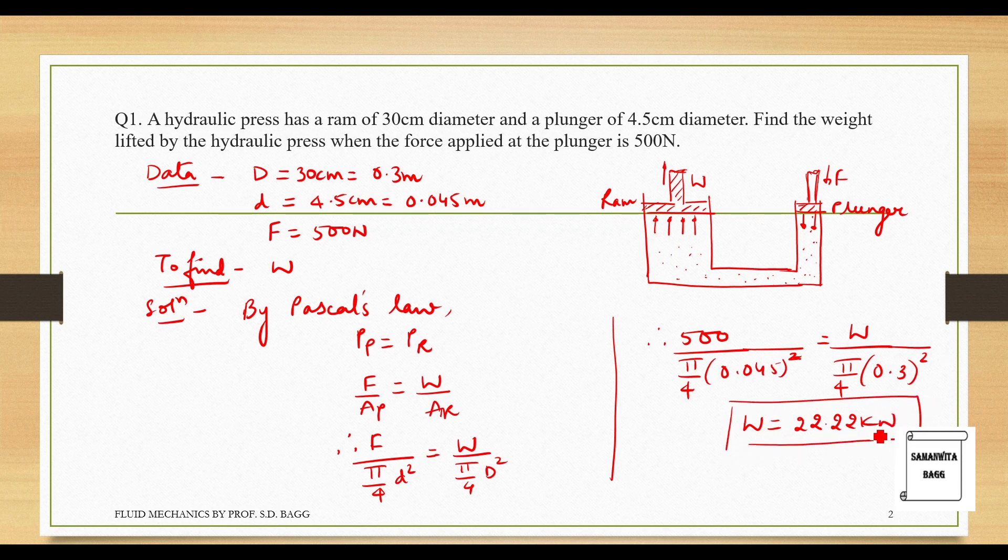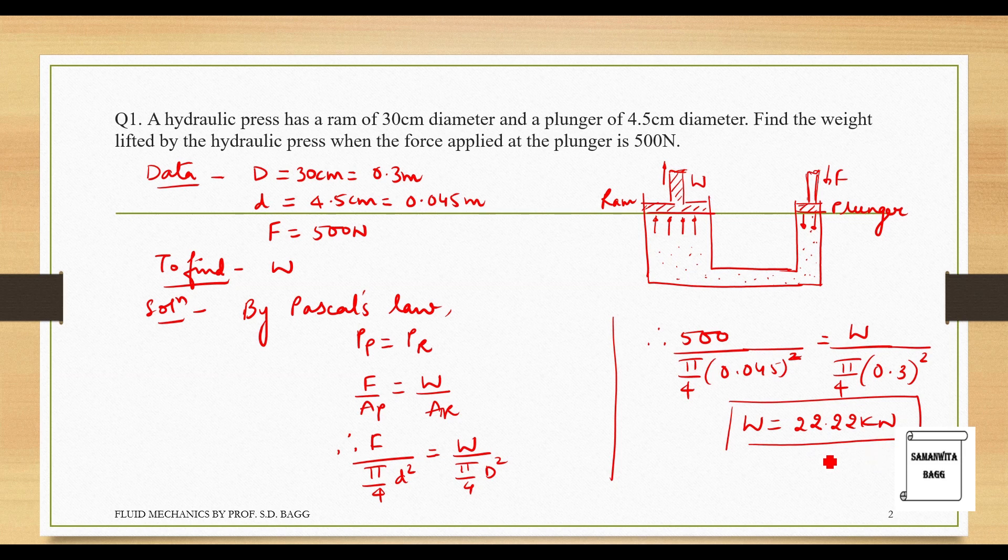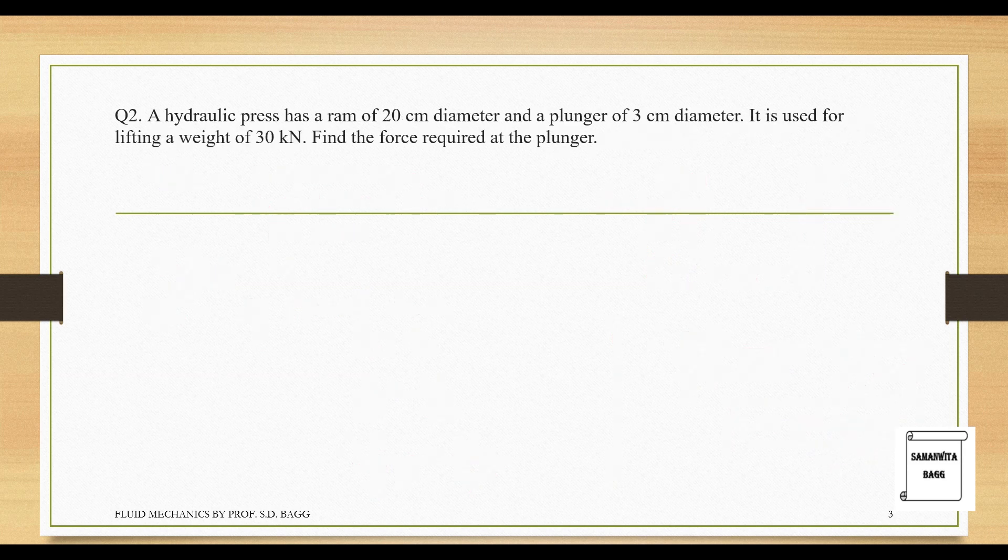That means there will be a 10 raised to 3 N value that you get. I have converted into kN form. You can leave it as N as well. Let's take up another numerical.